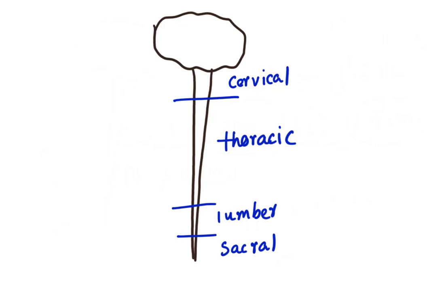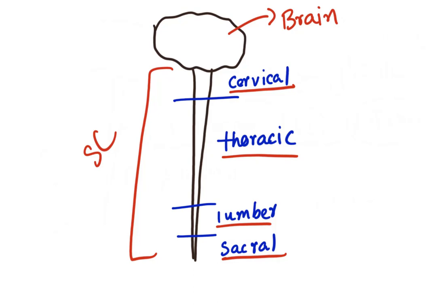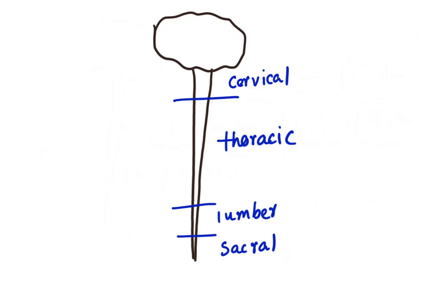The spinal cord is divided into different segments: the upper one is cervical, then thoracic, then lumbar, then sacral. With this basic introduction, let us discuss the sympathetic and parasympathetic divisions separately.